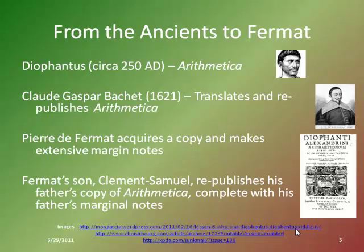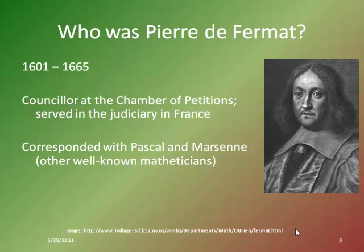As it turns out, Fermat had actually sent copies of some of his margin notes — puzzles he had created — to a few people. He was known to torment other mathematicians of his day by sending them fairly hard problems and claiming to have a solution but forcing them to come up with one of their own. Pierre de Fermat lived in the early 1600s and was a juror or lawyer by trade. He was an amateur mathematician, which in his mind meant he didn't really have to put in as much time or effort as other mathematicians.